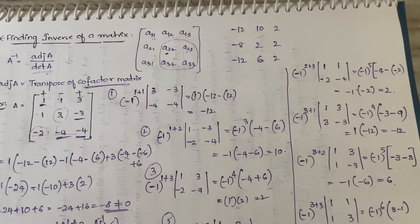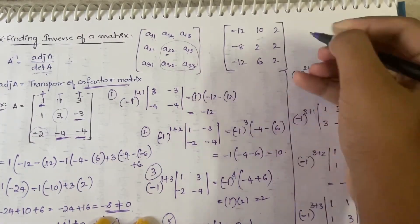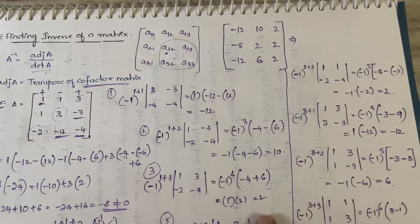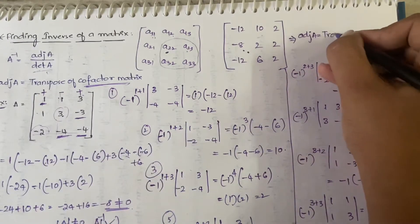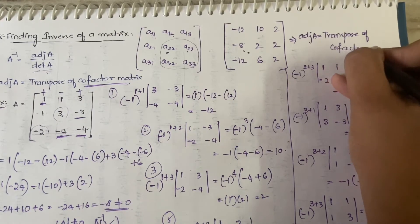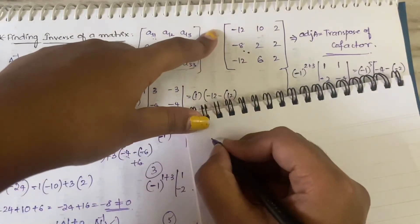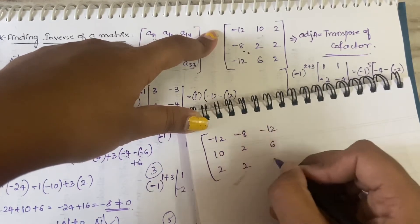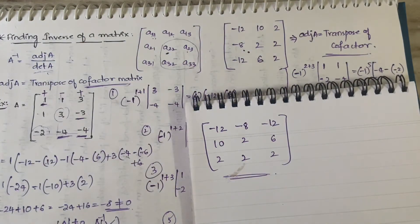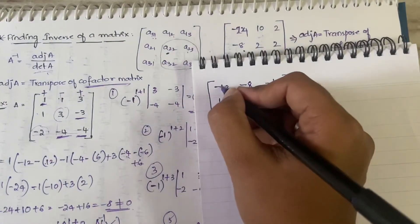So this is the cofactor matrix. To get adjoint A, you take the transpose of the cofactor matrix. Adjoint A equals the transpose of the cofactor matrix. The transpose gives: first row becomes −24, −8, −12; second row 10, 2, 6; third row 2, 2, 2. Note: some elements need correction — the value is −24, not −12, in the appropriate positions.